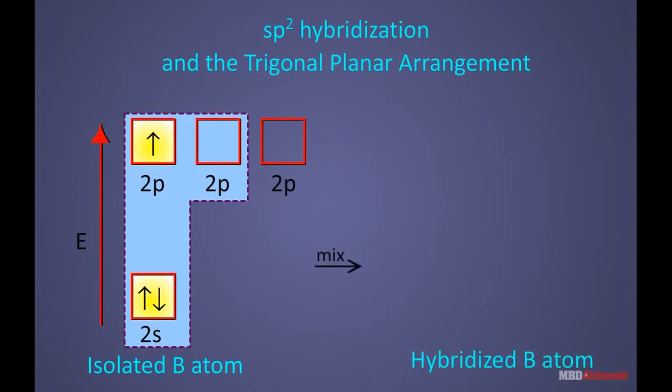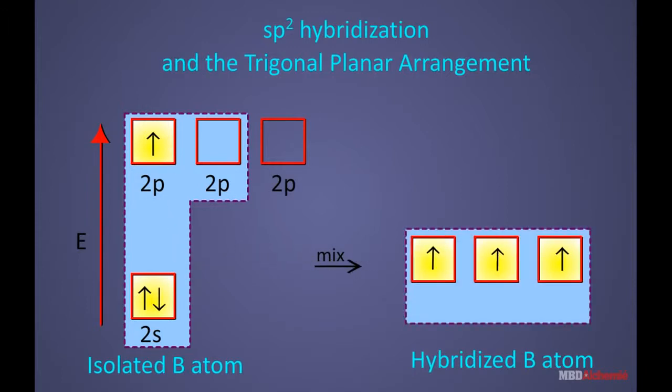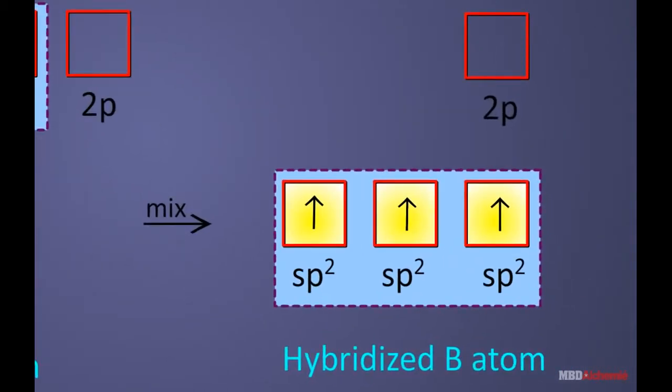To account for the trivalency of B, one of the 2s electrons is promoted to a vacant 2p orbital. Therefore, the excited state of boron has 3 unpaired electrons. These 3 orbitals—one 2s and two 2p—hybridize to form 3 sp2 hybrid orbitals.